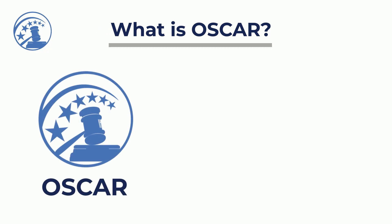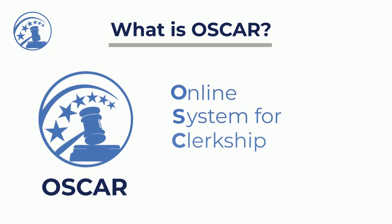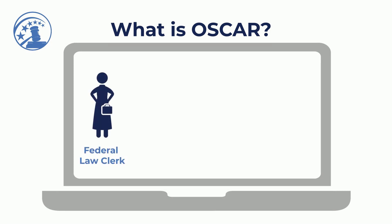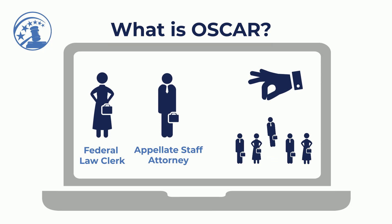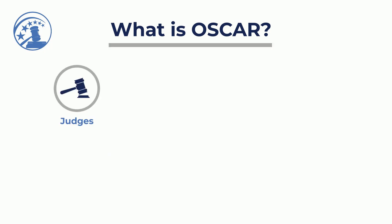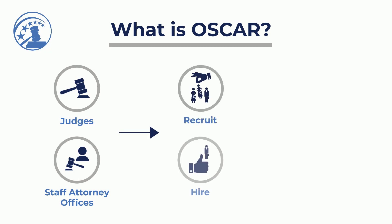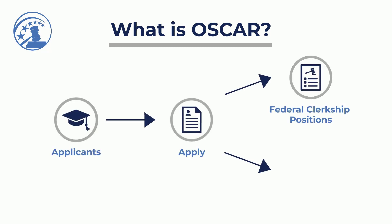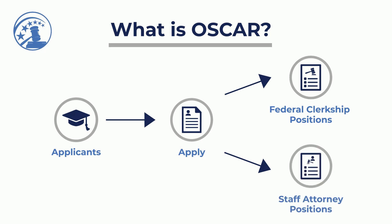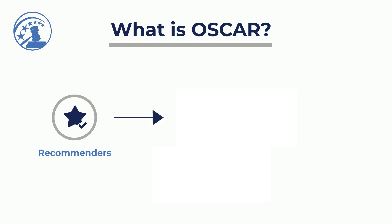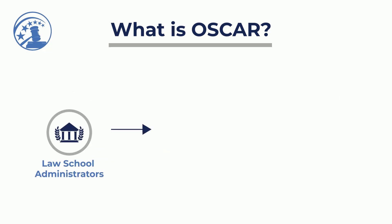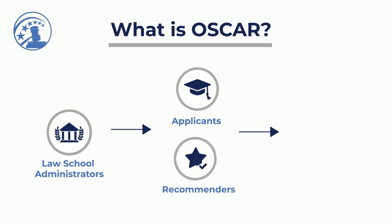What is OSCAR? OSCAR is the online system for clerkship application and review. It's a web-based system for federal law clerk and appellate staff attorney recruitment. Judges and staff attorney offices can recruit and hire candidates who meet their needs. Applicants can easily apply to federal clerkship positions and staff attorney positions. Recommenders submit recommendation letters on behalf of applicants.